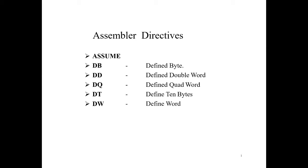Similarly, directives for any other microprocessor are to be given at the beginning of the program. Directives for Pentium processors are 586 for a real mode instruction set and 586P for protected mode instruction set. In case the programmer does not give the option for a microprocessor, the assembler selects the 8086 or 8088 instruction set by default.